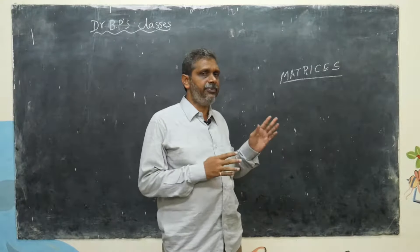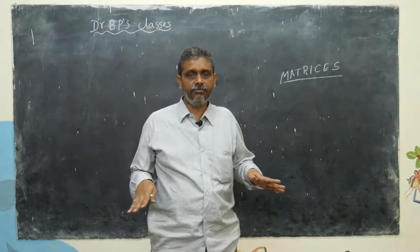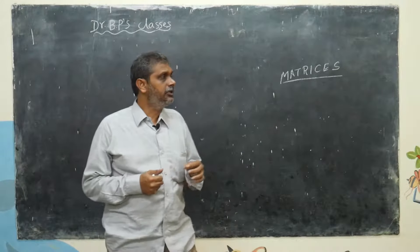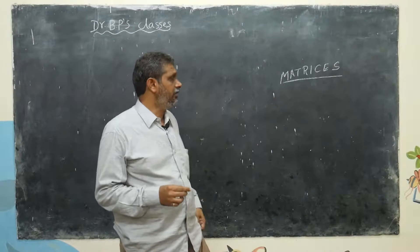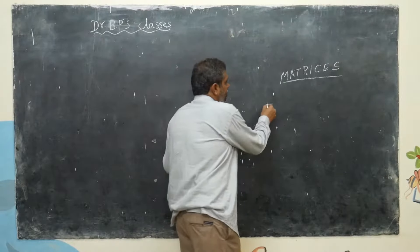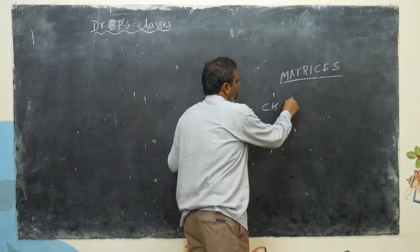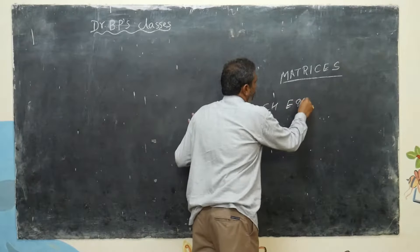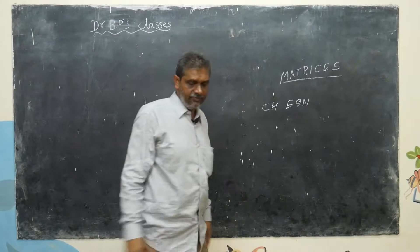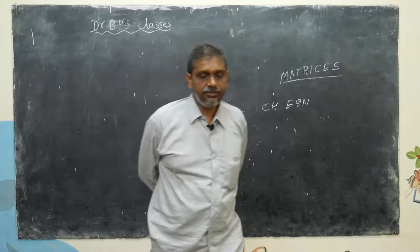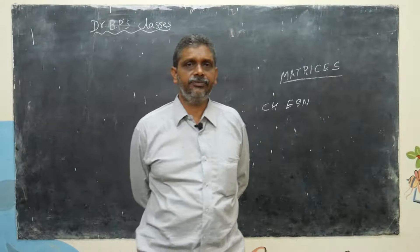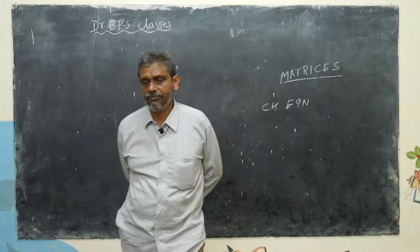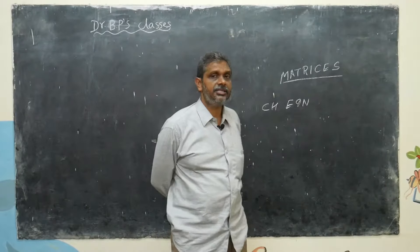See, eigen means characteristic. So first, if you want matrices, you can find characteristic equation. They will call it CH equation. Generally, eigenvalues and eigenvectors - to find what? Using the square matrix. Using the square matrix, they will find out. Then what is the characteristic equation? First matrices, characteristic equation.